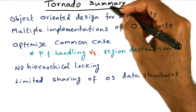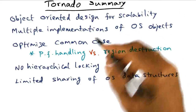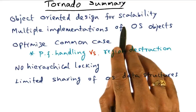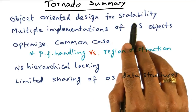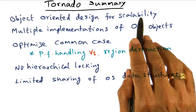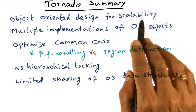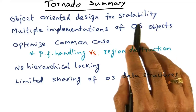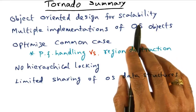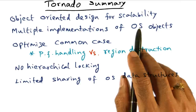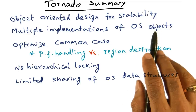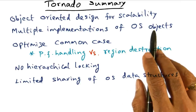To summarize the Tornado features: it's an object-oriented design which promotes scalability. The idea of clustered objects and the protective procedure call is mainly with a view to preserving locality while ensuring concurrency.